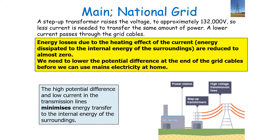This means a lower current passes through our transmission cables. The energy loss is due to the heating effect of the current, where energy dissipated to the internal energy of the surroundings is reduced to almost zero. But then we need to lower the potential difference at the end of the transmission cables before we can use this mains electricity at home.